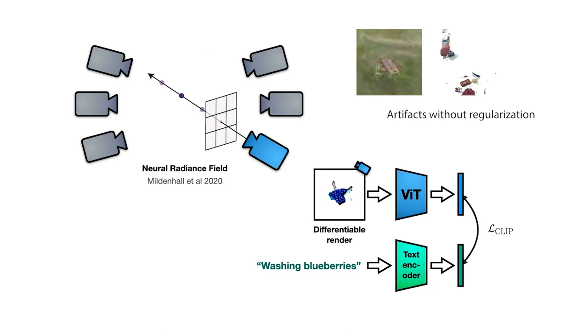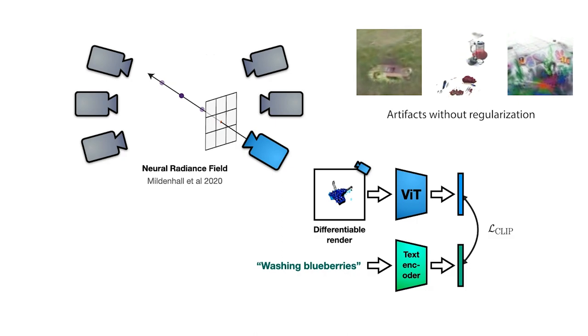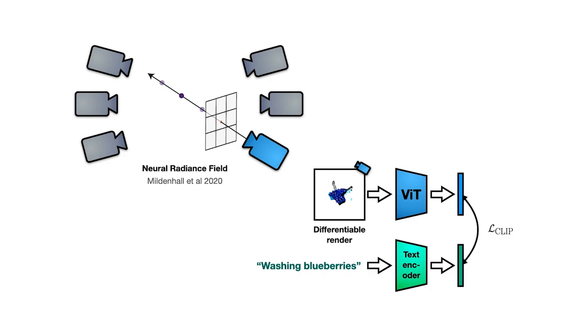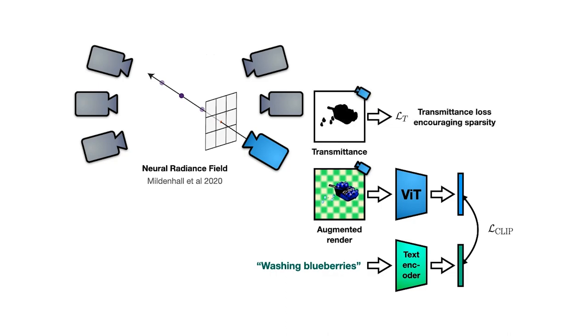However, if we just use this naive approach of maximizing CLIP loss on objects with white backgrounds, many artifacts emerge in the renderings such as scenes saturated with content and duplicated objects. To improve quality, we augment the backgrounds of the objects with randomly generated background images and impose a transmittance loss that encourages high transparency in the renderings. In addition to sparsifying the scene, we improve quality with scene bounds and improved MLP architectures.